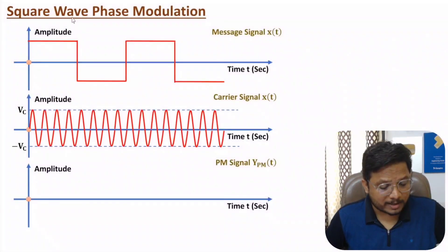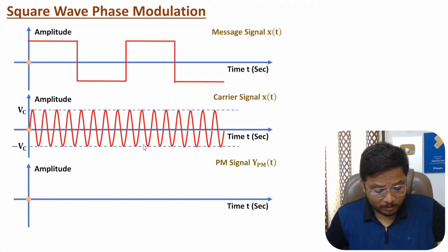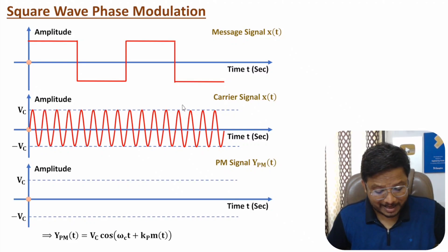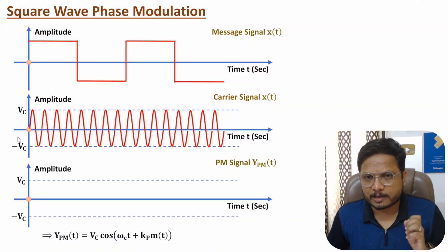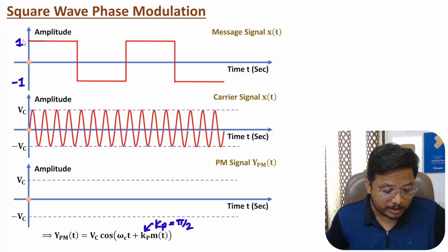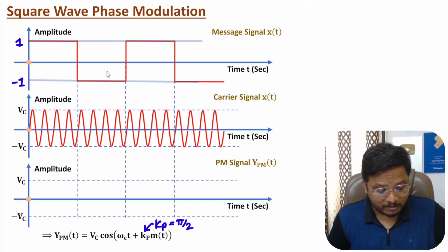Now I will explain an example of square wave phase modulation. The message signal is a square wave and the carrier is a sinusoidal wave with frequency ωc. The PM signal equation is vc·cos(ωc·t + kp·m(t)), with Vc constant. I consider kp = π/2 and m(t) as a square wave ranging from +1V to −1V. So during the positive half cycle, m(t) = +1, and during the negative half cycle, m(t) = −1.